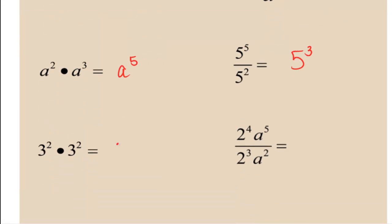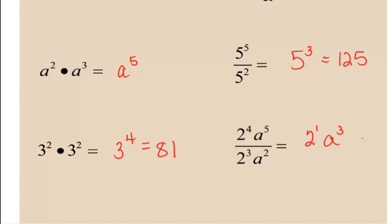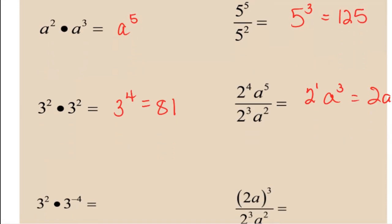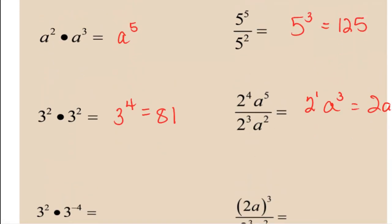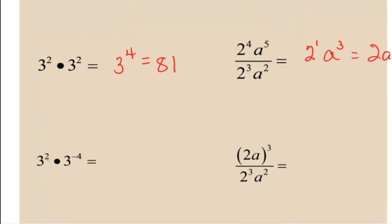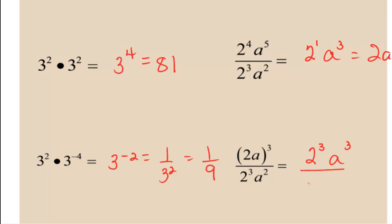In our next example, we keep our base and add our exponents. Then we have 4 minus 3 is 1, so we'll just leave it as 2, or you can put 2 to the first. And then 5 minus 2 is 3, so that's 2A to the third. Use your order of operations — simplify these before you multiply them out. So next, we have 2 plus negative 4, which gives us 3 to the negative 2nd, which is 1 over 3 squared, which is 1/9. Here we're going to distribute 2 cubed: A cubed over 2 cubed times A squared. 2 cubed divided by 2 cubed is 1, so those cancel. 3 minus 2 is 1, so that equals A to the first, or A.